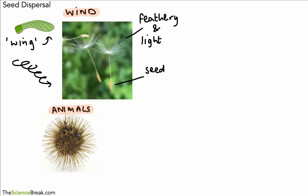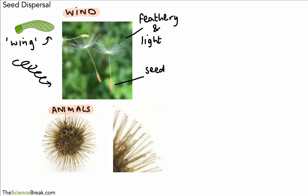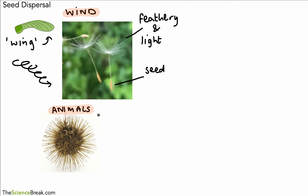Another way is using animals to disperse seeds. Here we have a type of seed inside a little brown casing, but if you look on the outside — you can see there are some little structures that are hooks, as shown there. These hooks attach to the fur of animals, and the seed can be carried away and then dropped somewhere far away from the parent plant.